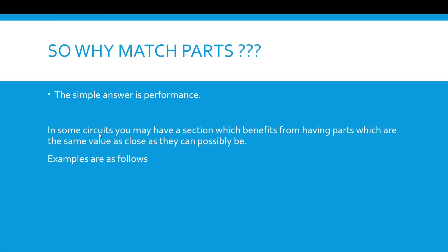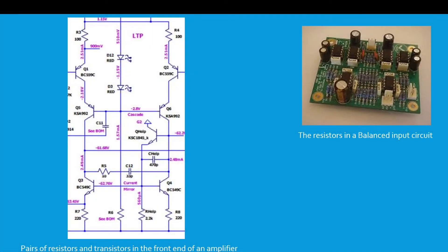So why match parts? The simple answer is performance. In some circuits you may have a section which benefits from having parts which are the same value or as close as they can possibly be. The input section to an amplifier is one example. This section on the left here is the Wolverine input section — you can see there's a differential pair with a cascode and a current mirror. The resistors at the bottom will provide better performance if they're matched — get two values as close to 220 ohm as you can, and both as close to each other as possible, to optimize for performance.